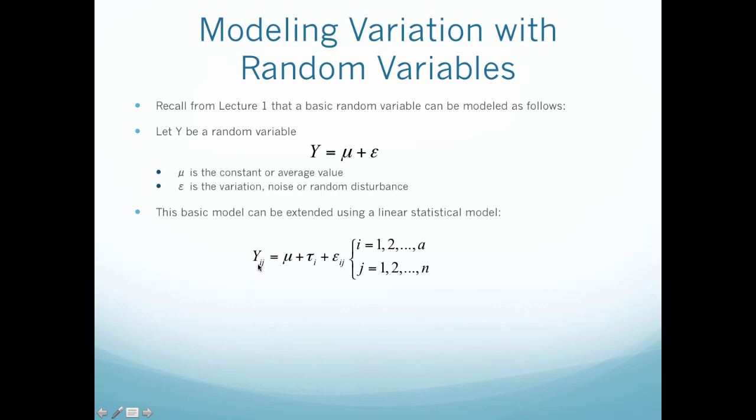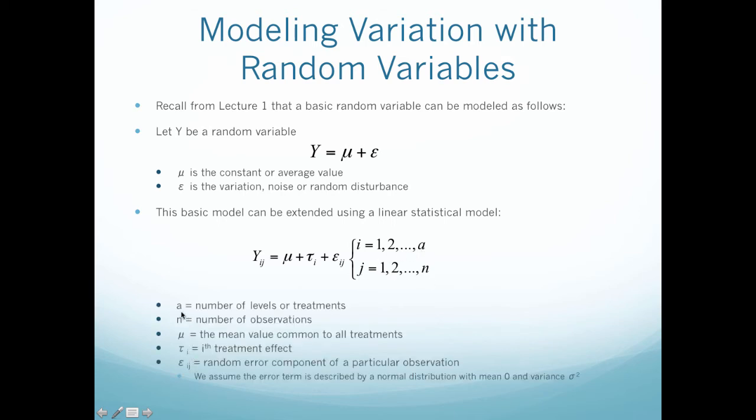So this can be extended to a linear statistical model where Y sub ij is equal to mu plus tau sub i plus epsilon sub ij, where i is my number of treatments all the way to a, and j is my number of observations all the way to n. So a is my number of treatments, n is my number of observations, mu is the mean value to all treatments, tau is my ith treatment. So note, we can now define individual mu or treatment mu equals mu plus tau to simplify this expression. So it still is going to be my average plus some difference, and we're going to figure out those values. We will see an actual example with real numbers in the next video.